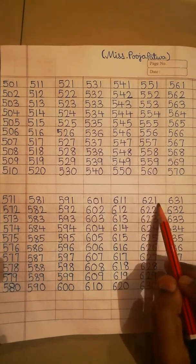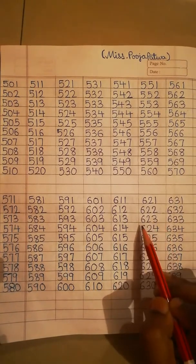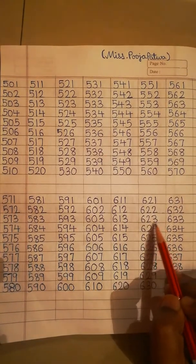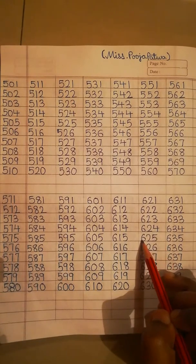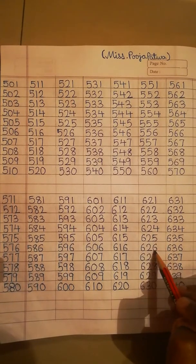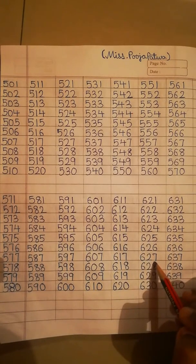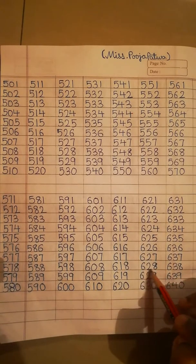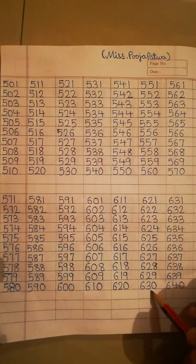621, 622, 623, 624, 625, 626, 627, 628, 629, 630. Next line.